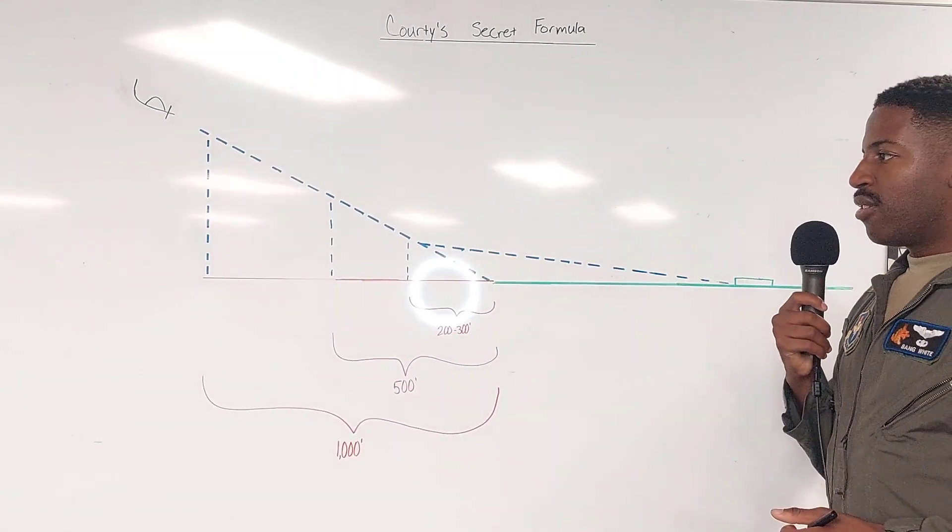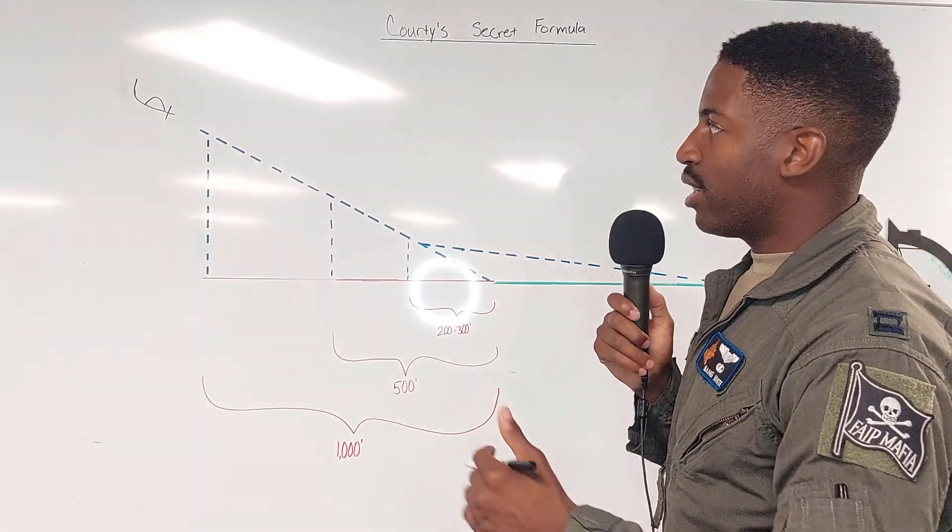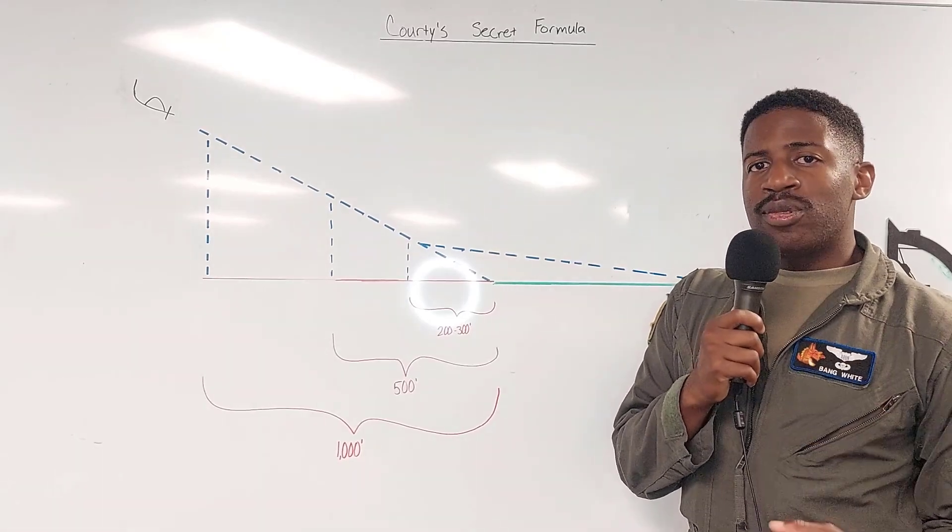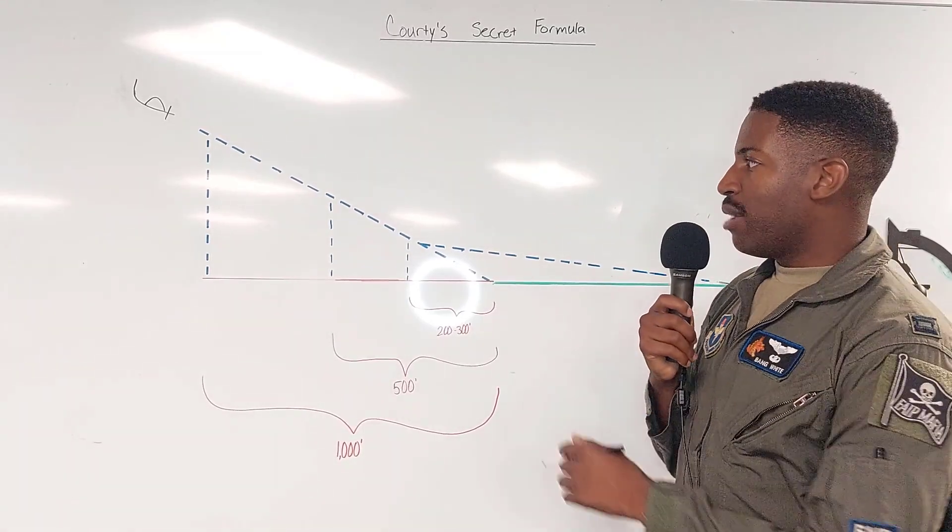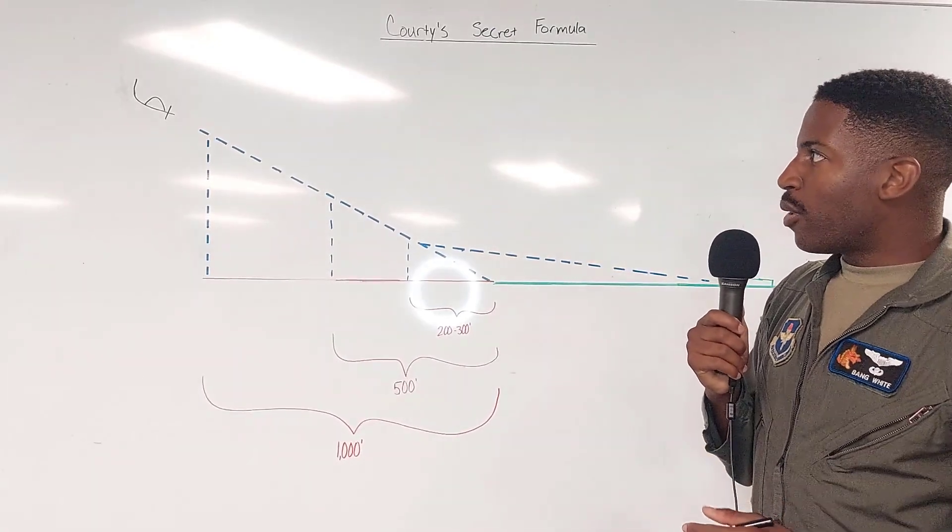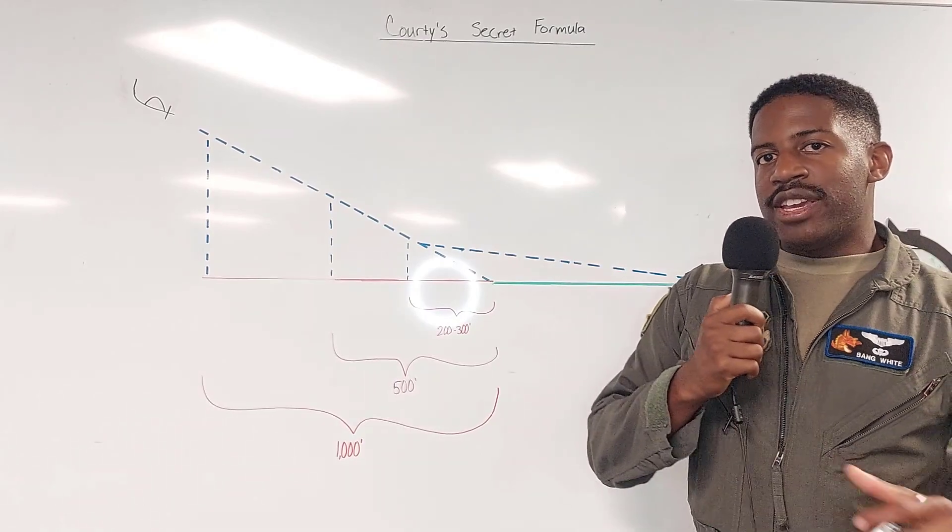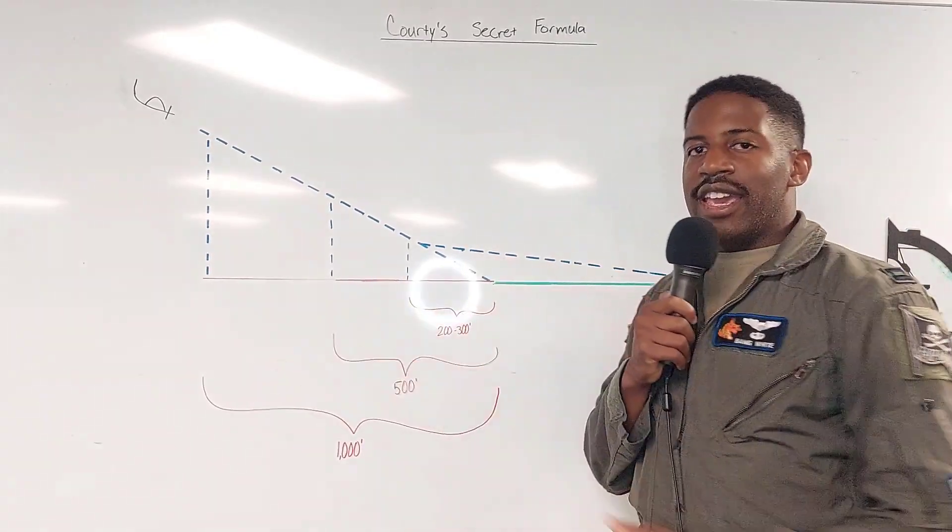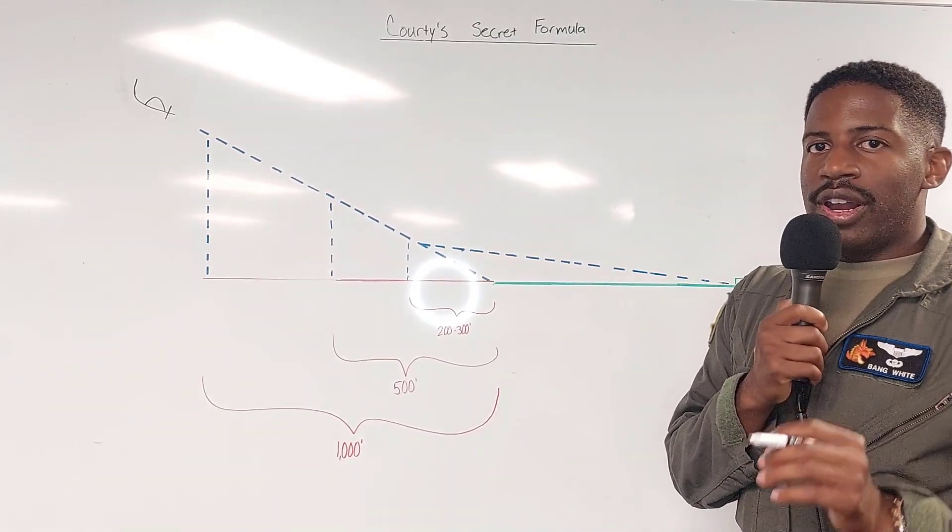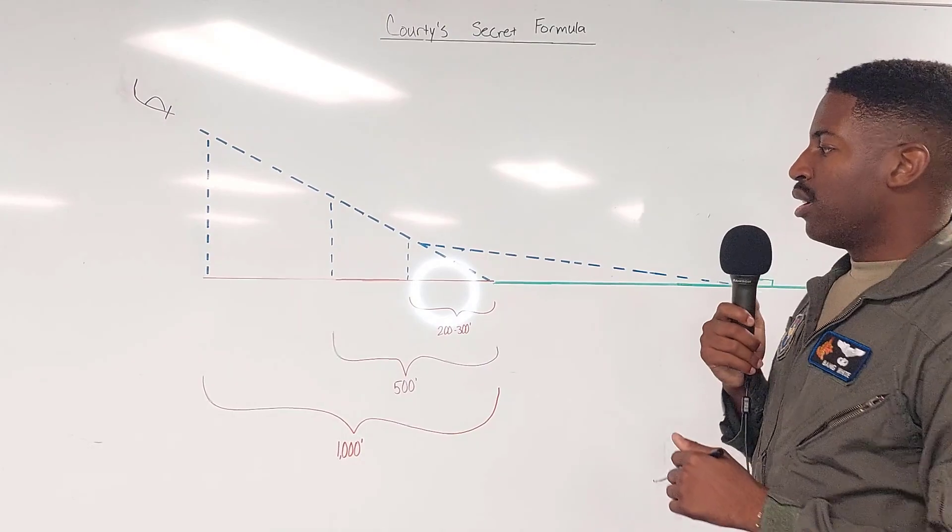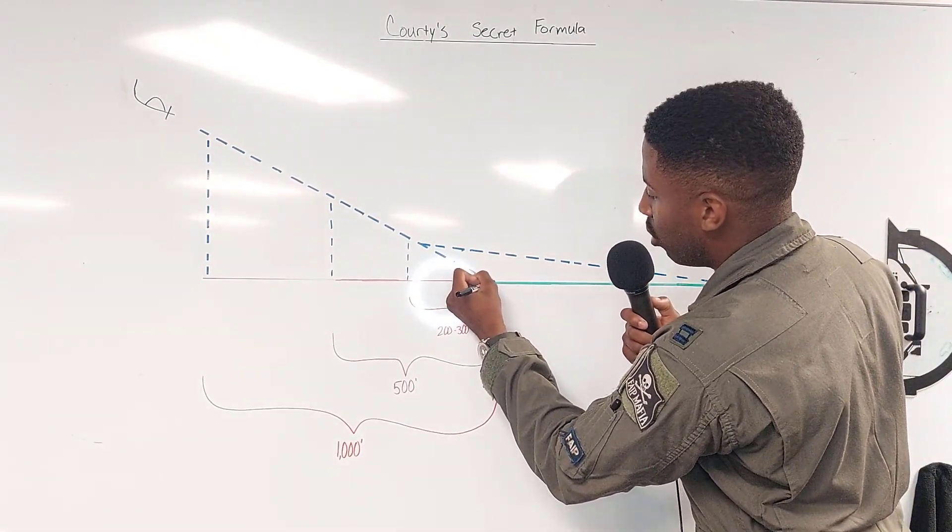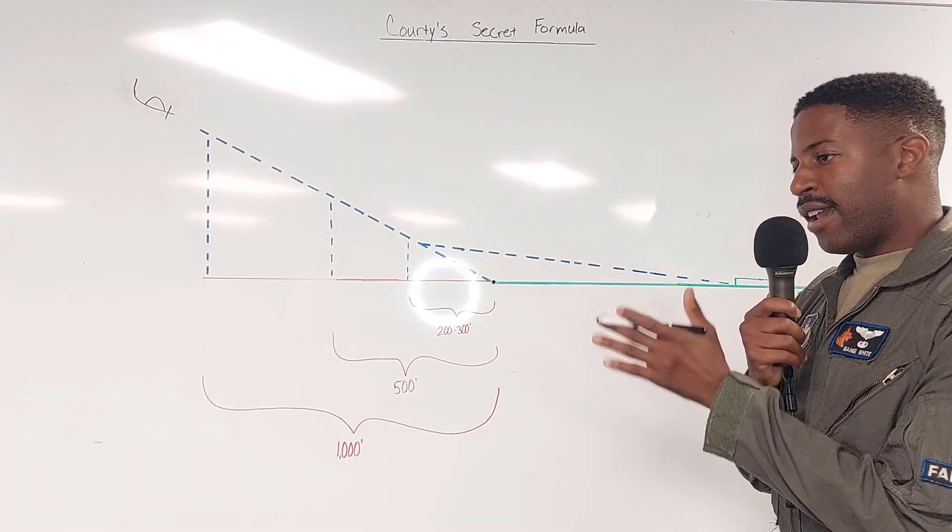All right, so the next thing that this is predicated on is that once we roll out on final, we are on a stable airspeed and we have our aim point fixed. So what do I mean by aim point? The aim point is if you were to let go of the aircraft and the plane would just go ballistic and fly on whatever trajectory you leave it on, where would the beak of our aircraft impact? The answer should be right here at the threshold at brick one at the seam where the runway meets the threshold, the grass, the underrun, whatever.